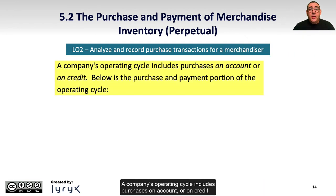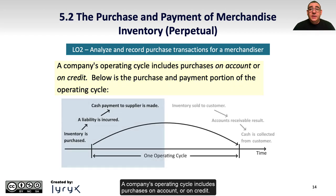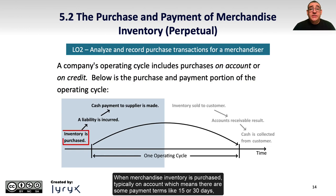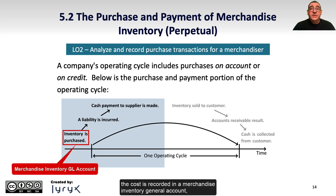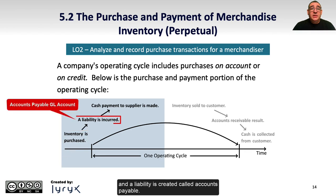A company's operating cycle includes purchases on account or on credit. Here's the purchase and payment portion of the operating cycle. When merchandise inventory is purchased, typically on account, which means there are payment terms like 15 or 30 days, the cost is recorded in a merchandise inventory general ledger account, and a liability is created called accounts payable.